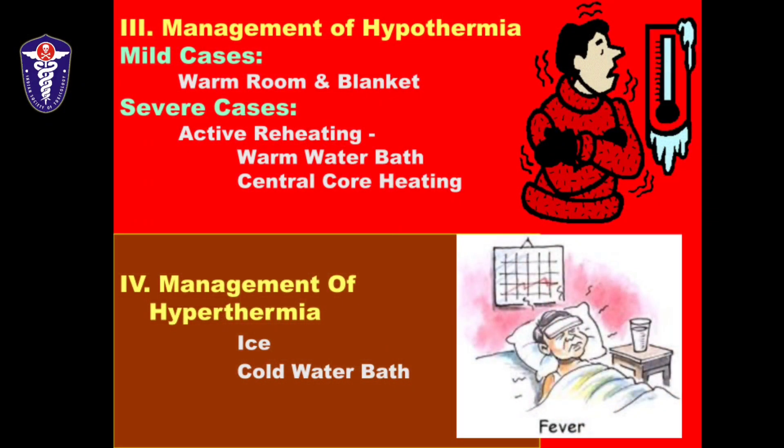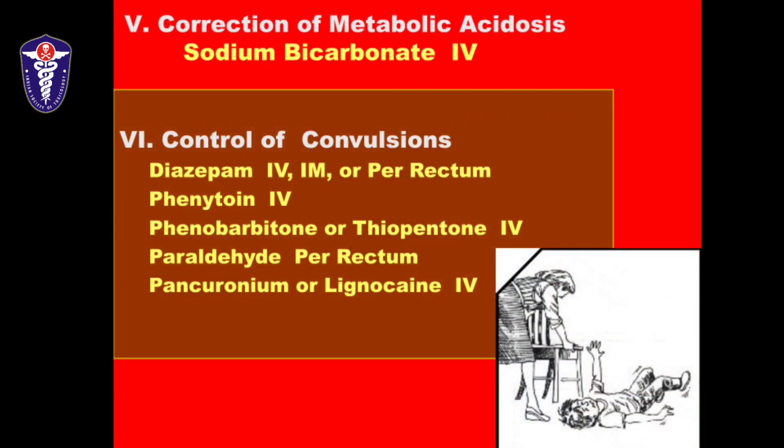Another key aspect in ER management is hypothermia. Mild cases can be managed with a warm room and blankets; severe cases may require active reheating including warm water bath or central core heating. If the patient is hyperthermic, external cooling measures like ice cold water bath are needed alongside pharmacological interventions. Toxicological patients can present with convulsions — manage with diazepam given IV or IM, and if refractory move on to phenytoin. If seizures severely impede ventilation, paralytics may be considered.